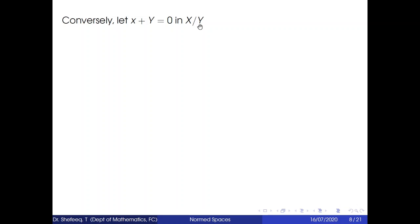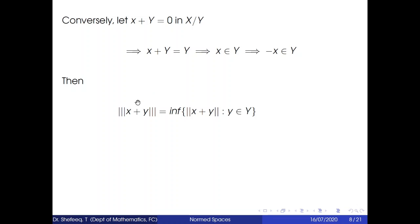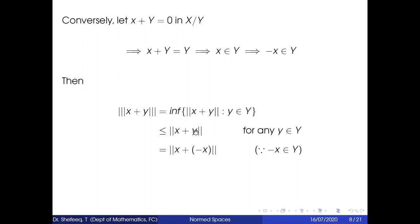Conversely, let x + Y = 0 in the quotient space. Then x + Y = Y, which implies x belongs to Y. So −x belongs to Y. Then the quotient norm of x + Y, by definition the infimum of the set, is less than or equal to ‖x + y‖ for any y in Y. Taking y = −x, since −x ∈ Y, this equals 0. So the if-and-only-if condition is satisfied. That completes the second condition.